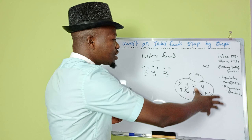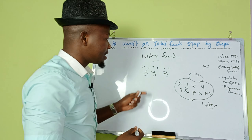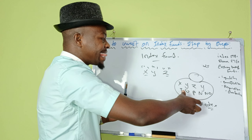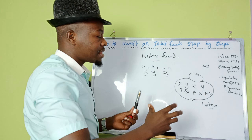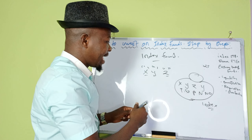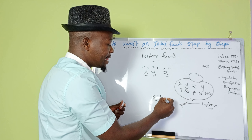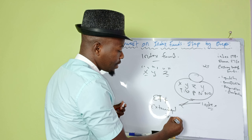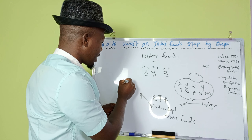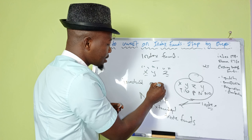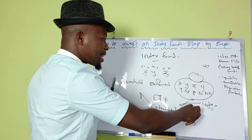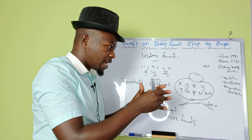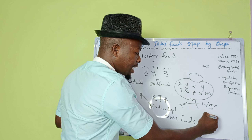Now, when we talk about index funds, this is a very different concept. Instead of buying shares of a single company like company X, the index fund works like a basket. In this basket, multiple companies — Y, W, P, M, N, and others — are put together collectively. This collection of companies is what we call an index, rather than buying shares of just one given company.